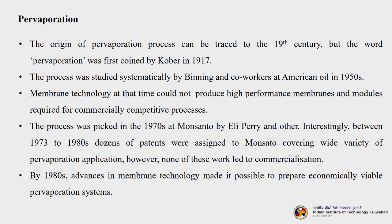The process was systematically studied by Binning and co-workers at American Oil in the 1950s. Membrane technology at that time could not produce high performance membranes and modules required for commercially competitive processes. The process peaked in the 1970s by Monsanto. Interestingly, between 1973 to the 1980s, dozens of patents were assigned to Monsanto covering a wide variety of pervaporation applications. However, none of this work led to commercialization. By the 1980s, advances in membrane technology made it possible to prepare economically viable pervaporation systems.